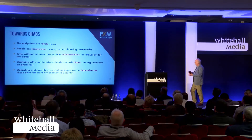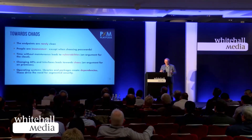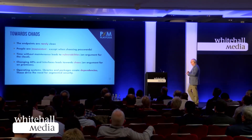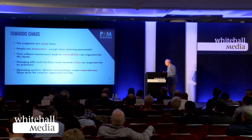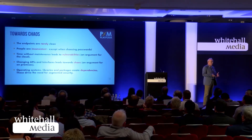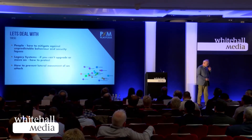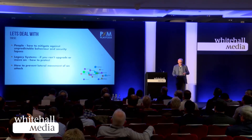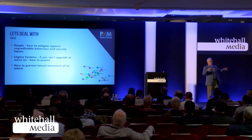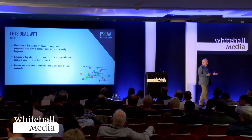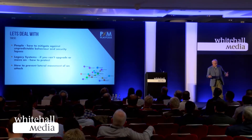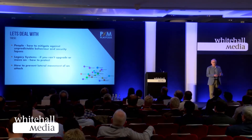So going towards chaos: your endpoints are not clean, your people are inconsistent, time without maintenance leads to vulnerabilities — an argument for the cloud. Changing IPs leads to inconsistencies and chaos — an argument for on-premises. Operating system libraries and the packages underneath all create dependencies. I'm going to skip talking about how to deal with legacy systems and how to prevent lateral movement — I'll hint at lateral movement as we go.